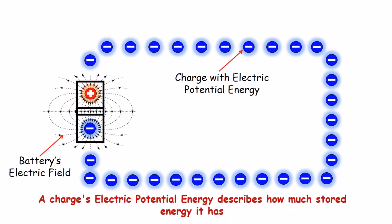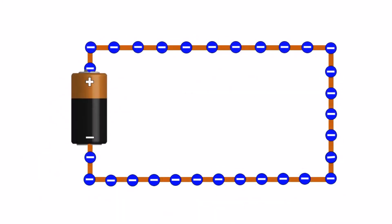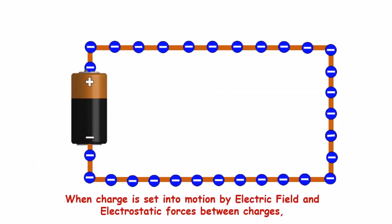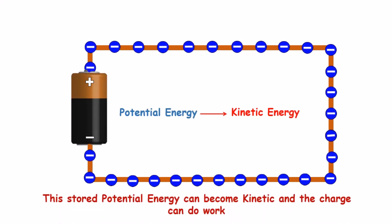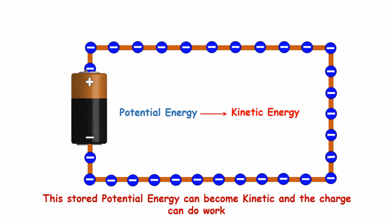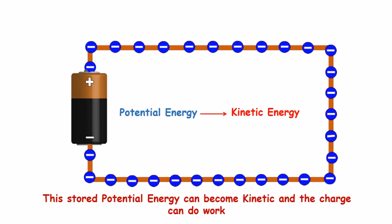A charge's electric potential energy describes how much stored energy it has. When charge is set into motion by electric field and electrostatic forces between charges, this stored potential energy can become kinetic and the charge can do work.